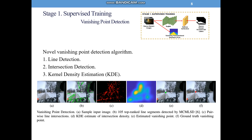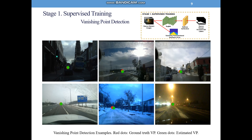Our novel vanishing point estimation algorithm consists of three steps: first, line detection; second, intersection detection; third, kernel density estimation. As can be seen from this example, we have an input target image for vanishing point detection shown in sub-figure A. We first do line detection and generate line segments, shown in sub-figure B. Next, we elongate the segments to straight lines and find all pairwise intersections between every pair of lines, shown in sub-figure C. Finally, we do kernel density estimation (KDE) on the intersections and pick the maximum of the KDE as our estimated vanishing point. The final estimated vanishing point is shown in sub-figure E, and sub-figure F shows the corresponding ground truth vanishing point labeled by a human labeler. More results are shown on this page.